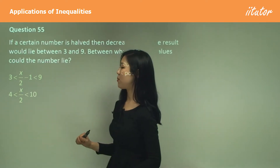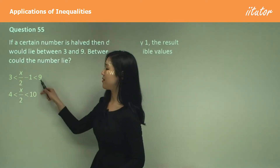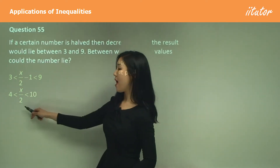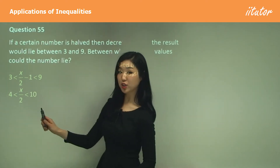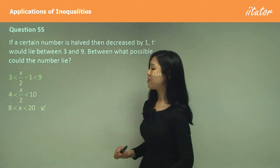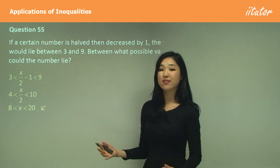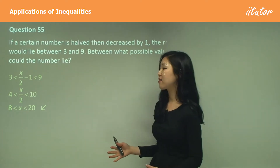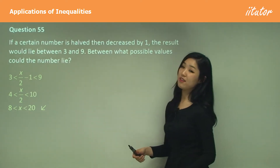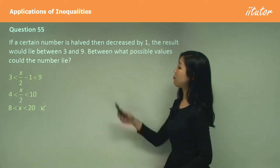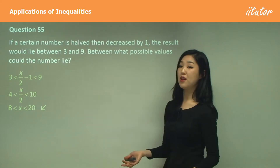Add 1 to both sides to get x/2 between 4 and 10, then multiply by 2 to get x between 8 and 20. So the answer is x is between 8 and 20.